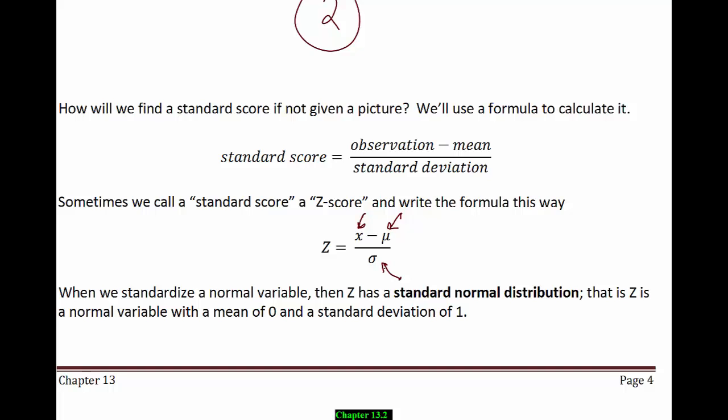When we standardize a normal variable, z has a standard normal distribution — a very important distribution. That is, z is a normal variable with a mean of 0 and a standard deviation of 1. That's a fact you'll want to know for the exam.